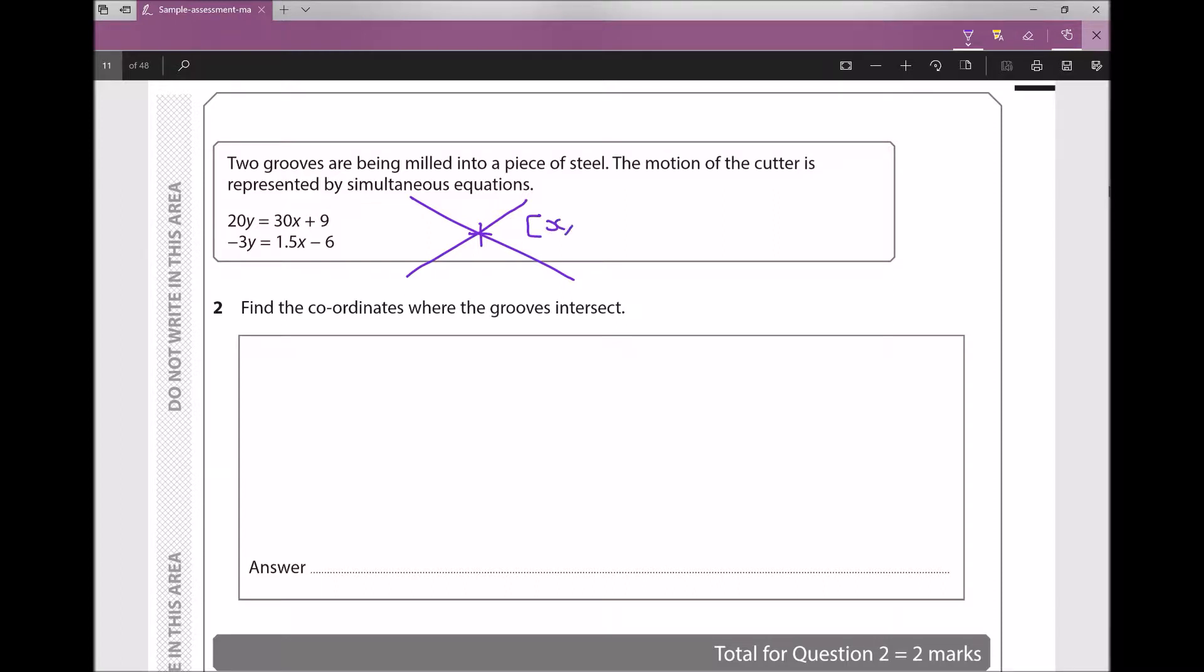Those x and y coordinates are going to be the x and y values that make both of these equations true simultaneously, or at the same time.